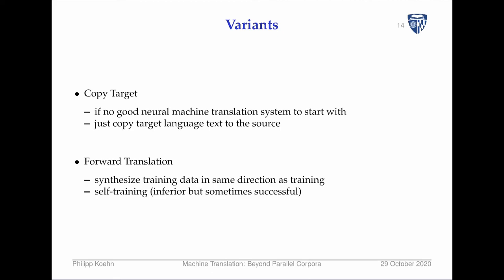Some variants on creating synthetic data from monolingual data include copy target — especially in low-resource scenarios where you don't have a good neural MT system, you can just copy the target language text to the source side. This has been shown to help in low-resource conditions. Another variant is forward translation or self-training, where instead of a back translation system you take monolingual text in the source language, translate it, and treat that as additional training data. This has generally been shown to be inferior, but sometimes successful.